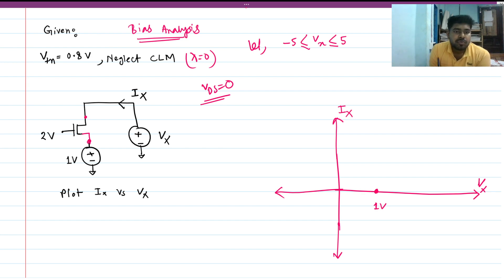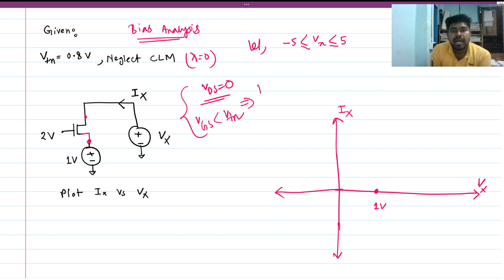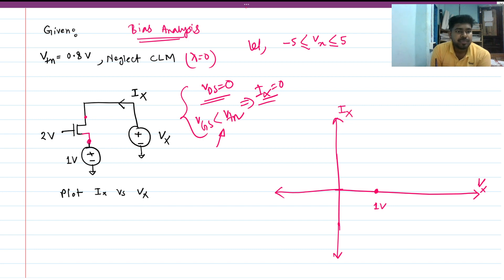The current can also be zero under another condition: when Vgs is less than Vtn. These are two conditions where Ix or Id equals zero. In the second condition, the NMOS is off, so there is no conduction.